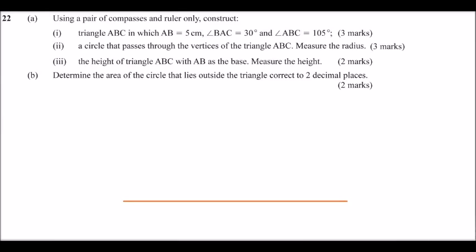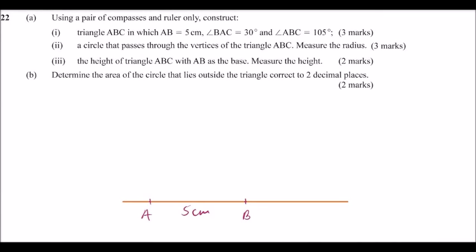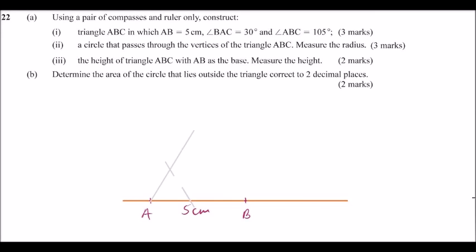You start by drawing a line where you measure 5 cm to come up with line AB. Measure 5 cm and mark your points A and B to get that length of AB. Then you construct angle 60°. To construct angle 60°, you measure a distance from A to a point, then make two arcs — that will be angle 60°, following the property of the equilateral triangle.